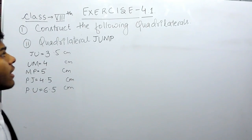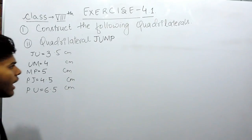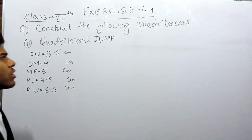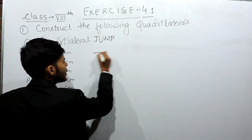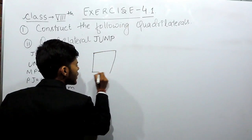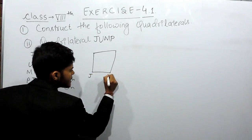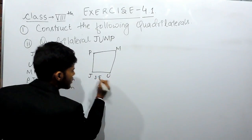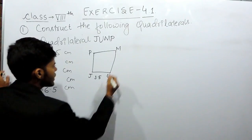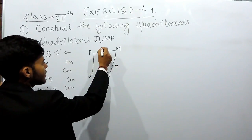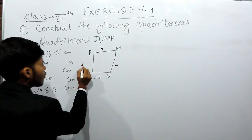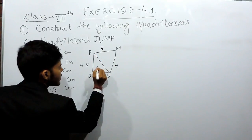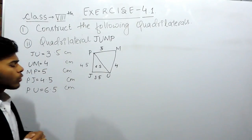This is part two of question number one of exercise 4.1. Here we have to construct the following quadrilateral. A quadrilateral is a figure of four sides. We'll draw a rough diagram — name it JUMP. We are given that JU is 3.5 centimeters, UM is 4 centimeters, MP is 5 centimeters, PJ is 4.5 centimeters, and diagonal PU is 6.5 centimeters.